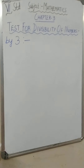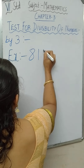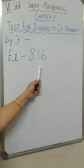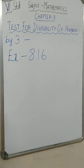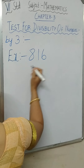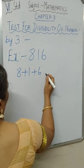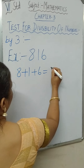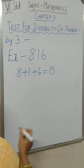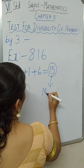For example, I will take the number 816. By looking at the number, can you tell whether it is divisible by 3? No. So what is the rule? The rule tells that you will add all the digits in this number — that is 8 plus 1 plus 6. When you add all these numbers, 8 plus 1 is 9, and 9 plus 6 is 15. You will add all the digits and the sum you get should be a multiple of 3.